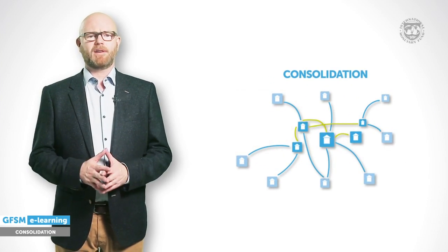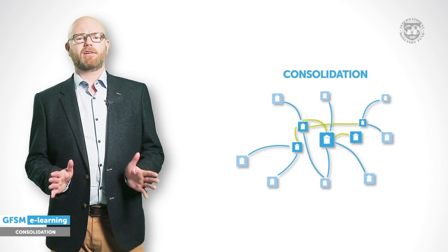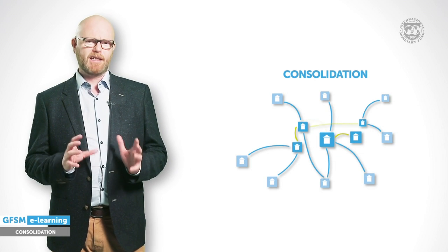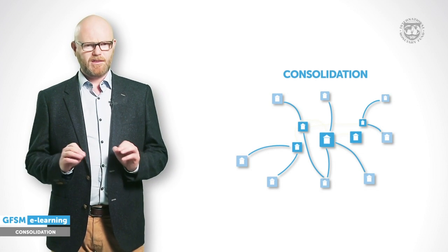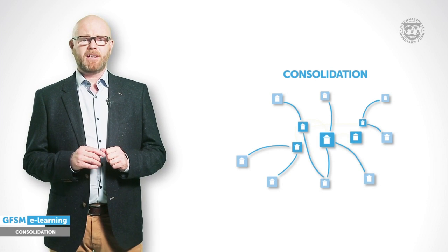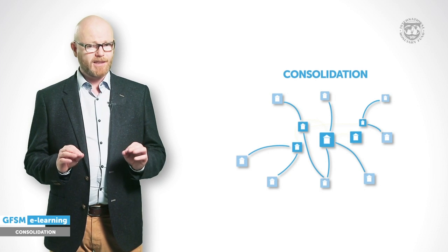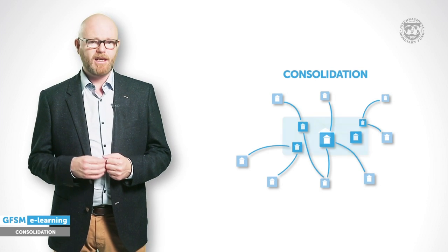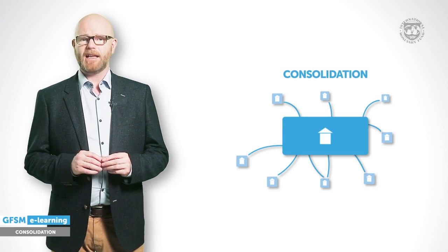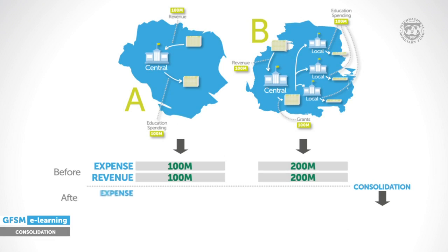Let me illustrate how consolidation works. The concept is quite straightforward. We need to identify and then eliminate all transactions and debtor-creditor relationships that occur within the general government sector. By consolidating, data of all general government institutional units are compiled as if they were a single unit interacting with the rest of the economy, and all inter- and intra-sectoral flows and relationships are not considered. Country A's data are unchanged.